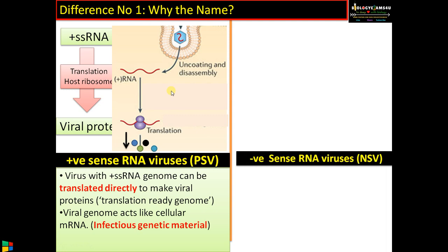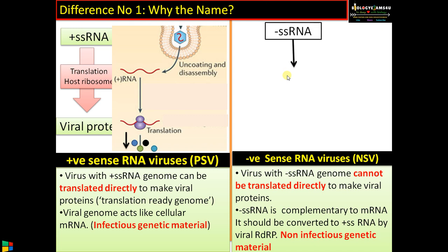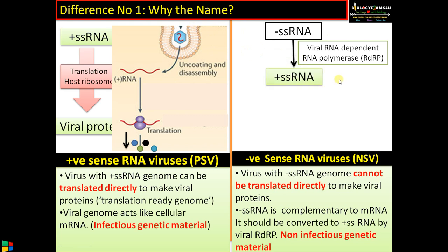Whereas in the case of negative sense RNA viruses, the genome cannot be translated directly to make viral proteins. It is complementary to mRNA, therefore it should be converted to mRNA or positive sense RNA by an RNA-dependent RNA polymerase, which is of viral origin. So this genome must be converted to positive sense RNA — equivalent to mRNA — and only then will it be translated to protein.